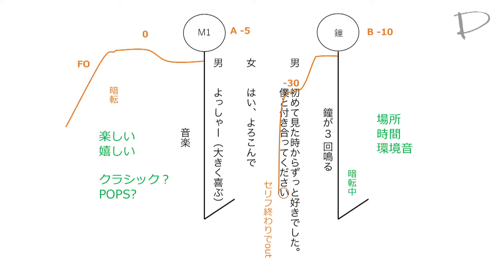自分が分かるような印を見つけてみてください。この流れで、さらに詳しいフェーダーの位置を書き込んでいきます。音は、Bフェーダーのマイナスマイナスからスタートしてセリフ前まで、マイナス30まで落ちています。音楽はAフェーダーでマイナス5からスタートして0まで上がっています。